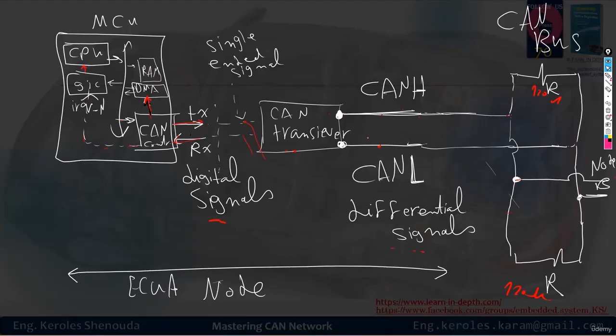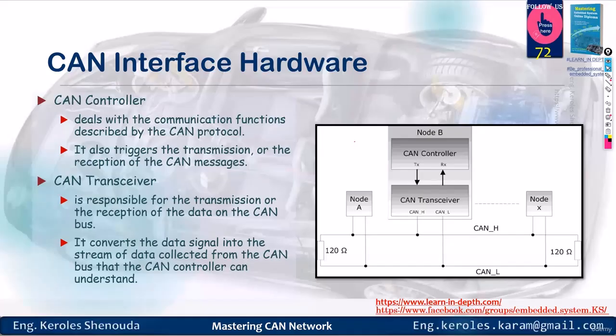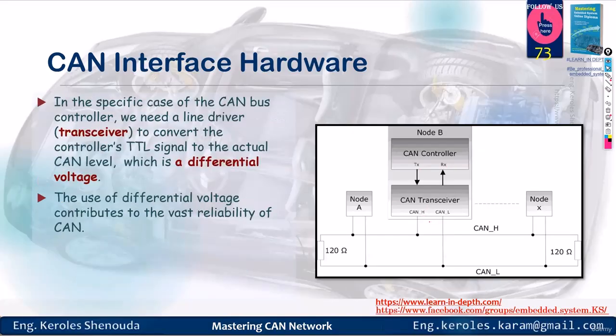Take a moment to understand this. The CAN high and CAN low are connected to the bus, which has termination resistances, each being 120 ohms. Of course, there's node B which is connected to the bus via high and low.